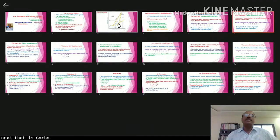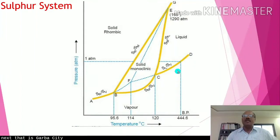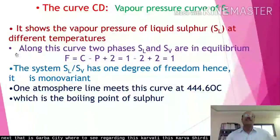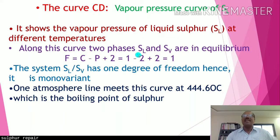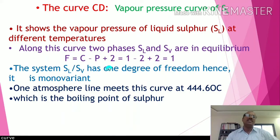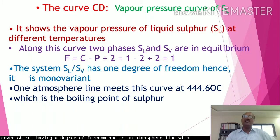Curve CD shows the vapor pressure of liquid sulfur at different temperatures. Along curve CD, liquid sulfur (SL) and sulfur vapor (SV) are in equilibrium. F = 1 − 2 + 2 = 1, so the system is monovariant. The one atmosphere line meets this curve at 444.6 degrees Celsius, which is the boiling point of sulfur.